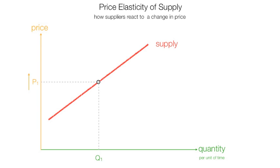If price rises, prices go up from P1 to P2, then quantity increases from Q1 to Q2. So quantity supplied increases that amount — the green line I just drew in. I am going to move that green line out of the way.